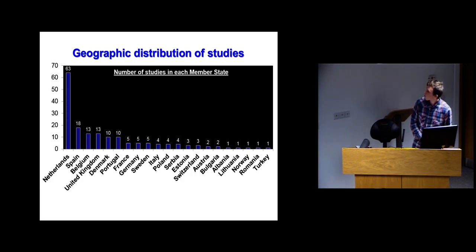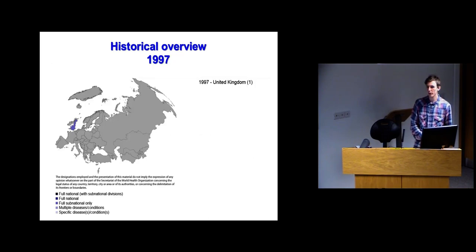An important message from this is that 21 countries have done burden of disease studies out of 53 member states I looked at, which was actually a lot better than what WHO thought it would be. So it was pretty good. To look at the years they were published and the types of studies together, I've got a map of the region with colors for the types of studies. On the right hand side, I've got the year they did their first study, the name of the member state, and in brackets the total number of studies for the year of the slide.